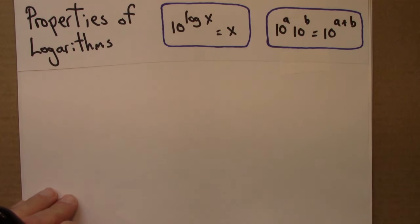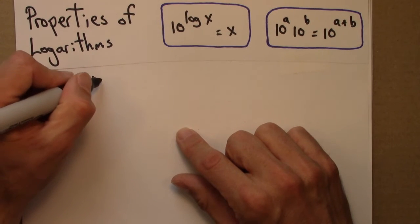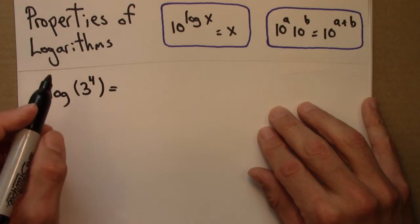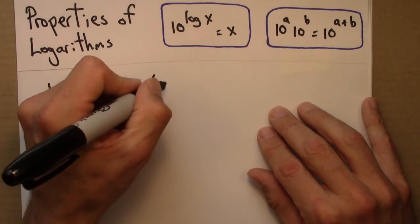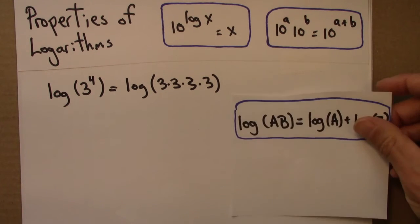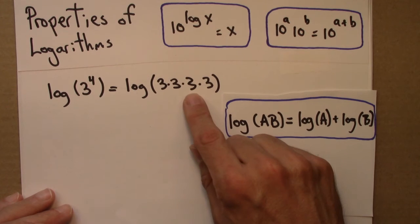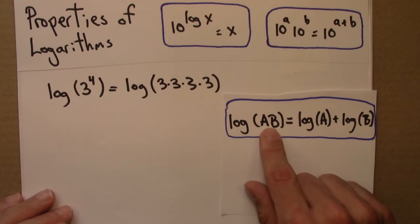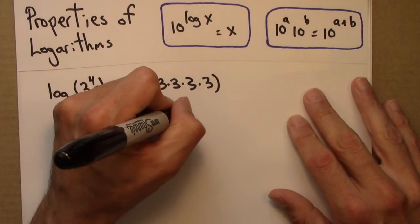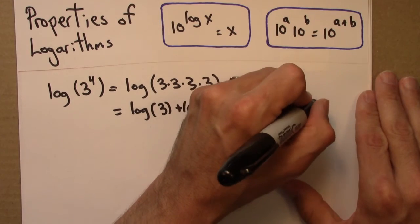One more really important property of logarithms: suppose I have log of 3 raised to the fourth power. Well, 3 to the 4 means 3 times 3 times 3 times 3. So that's log of 3 times 3 times 3 times 3. According to the rule we just derived, log of 3 times 3 times 3 times 3 is log 3 plus log 3 plus log 3 plus log 3. Logs turn multiplication into addition.